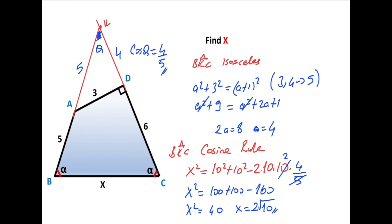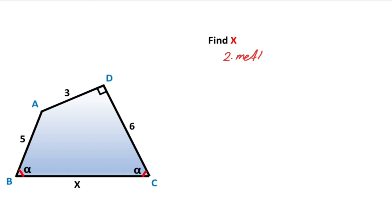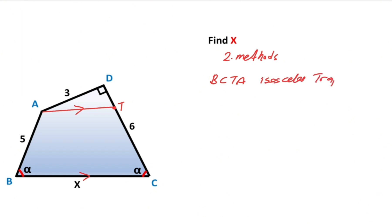So that is the first method. Now we will calculate the value of x using the second method. First, if we draw a parallel line to line BC like this, let's call here point T. We notice that we get an isosceles trapezoid — BCTA is an isosceles trapezoid. Therefore if one side is 5, this length is also 5 units.